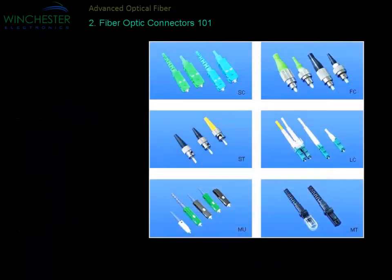Now let's have a look at some common connector styles. This diagram shows a number of different styles of telecom and data communications connectors that are also commonly used in all different applications. The three most common connectors are the ST, the SC, and the LC — often called the ST, SC, and the LC. The SC has a square-shaped body and is a latching connector with a boot and ceramic ferrule.